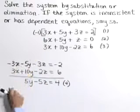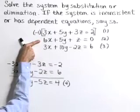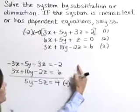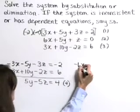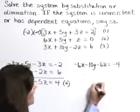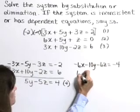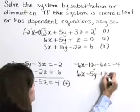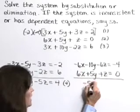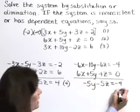Now let's go back to our original three equations and select equations one and two to eliminate x again. I'm going to fix equation one by multiplying it through by negative two, so equation one becomes negative six x minus ten y minus six z equals negative four. Writing equation two underneath: six x plus five y plus z equals zero. Adding these equations together, x eliminates and we get negative five y minus five z equals negative four. I'll call that equation five.